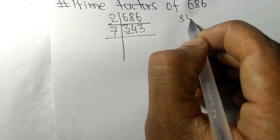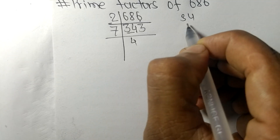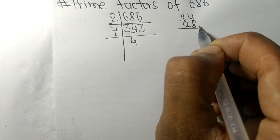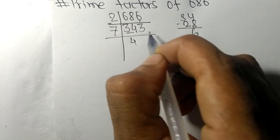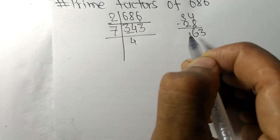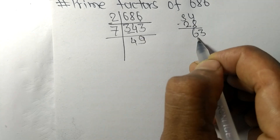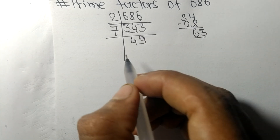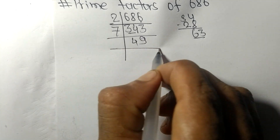347 divided by 7: 7 times 4 is 28, remainder 6, and then 63 — 7 times 9 is 63. So now we got 49.